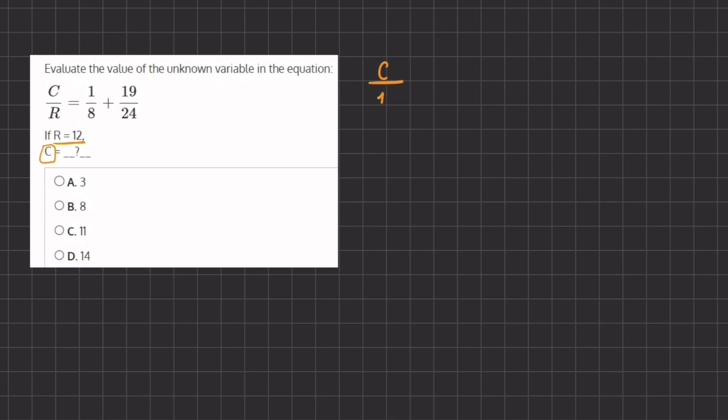So we have c divided by r, which is our 12, equals 1 eighth plus 19 over 24.